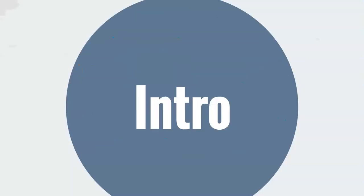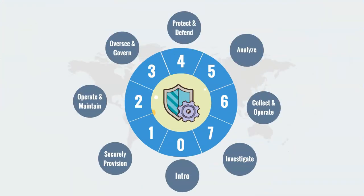Moving further, to cover the whole security end to end, NIST divided the whole security into seven domains. These seven domains are: Securely Provision, Operate and Maintain, Oversee and Govern, Protect and Defend, Analyze, Collect and Operate, and Investigate.